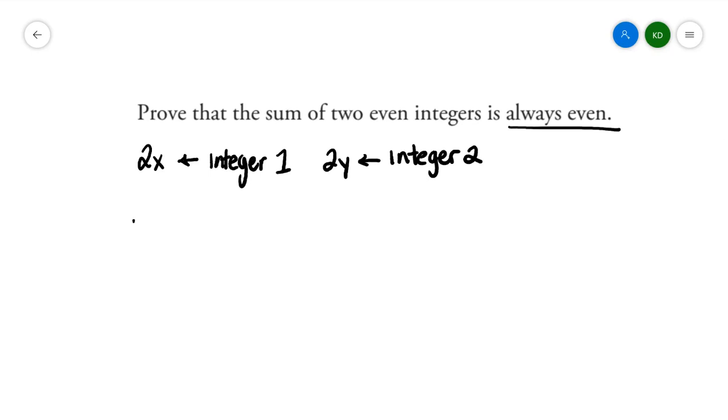So let's take their sum: 2x plus 2y. What I'm trying to turn this into in a general sense is I want it to look like the form 2 multiplied by something, and that something is going to be a variable. As long as I can make it look like this, then I'm proving that it's always going to be even.